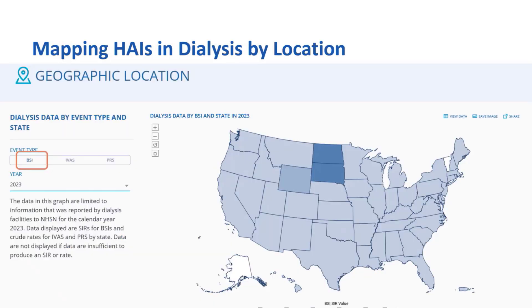The next section is the geographic location section. Here, we can start to drill down to look at a more granular view of the data. We have the three event types — BSI, IVAS, and PRS — and a dropdown for each year. Here in this screenshot, we're looking at the BSI SIR for 2023 selected. The map of the U.S. is a thematic map that uses shading to refer to rates. For states or territories with fewer than 10 reporting facilities, they're suppressed as insufficient data. This eliminates the ability to make inferences on a particular facility — for example, if we have a high SIR and there are only two facilities reporting in that state or territory, one can make a pretty good determination of where those events originate.